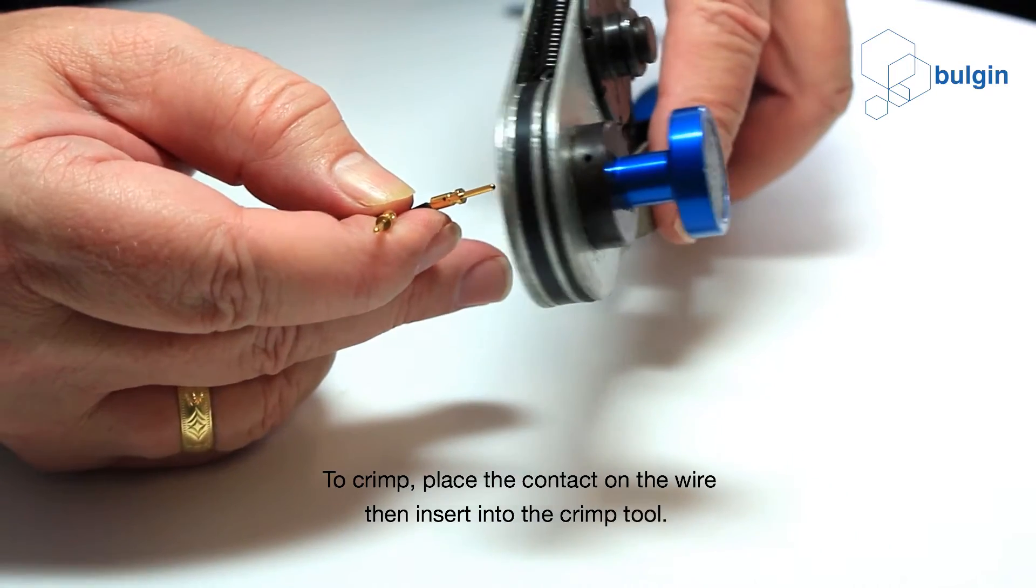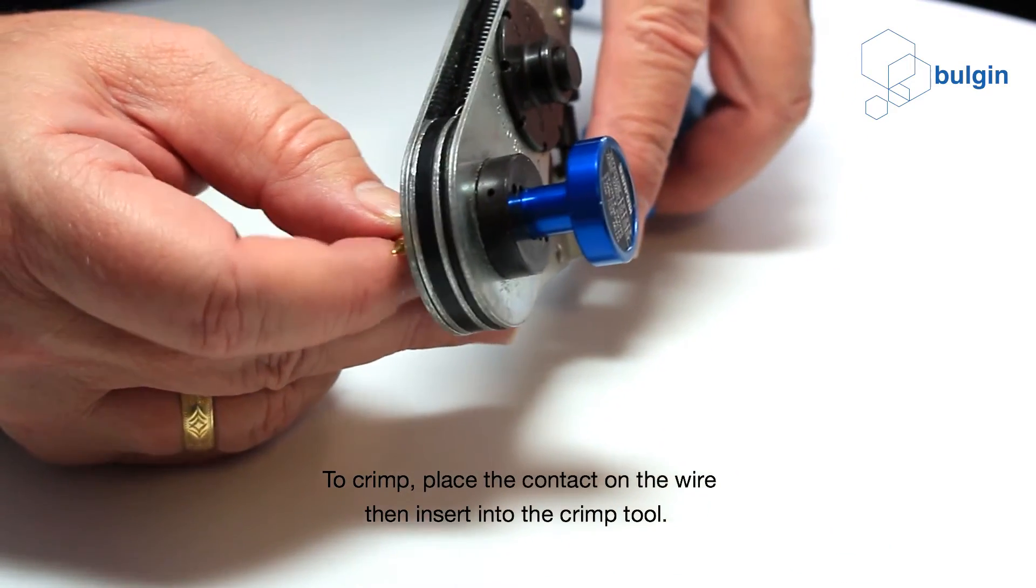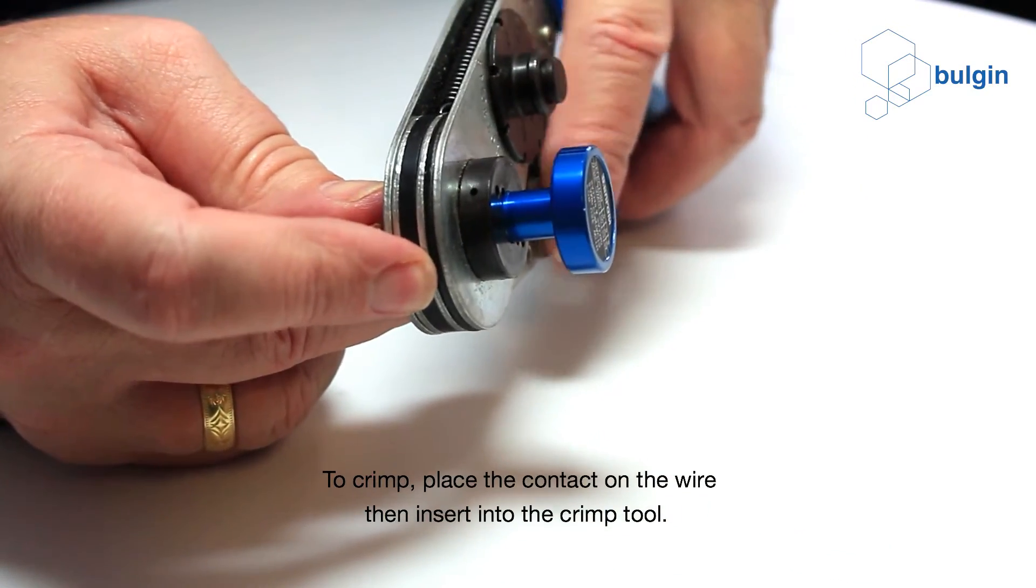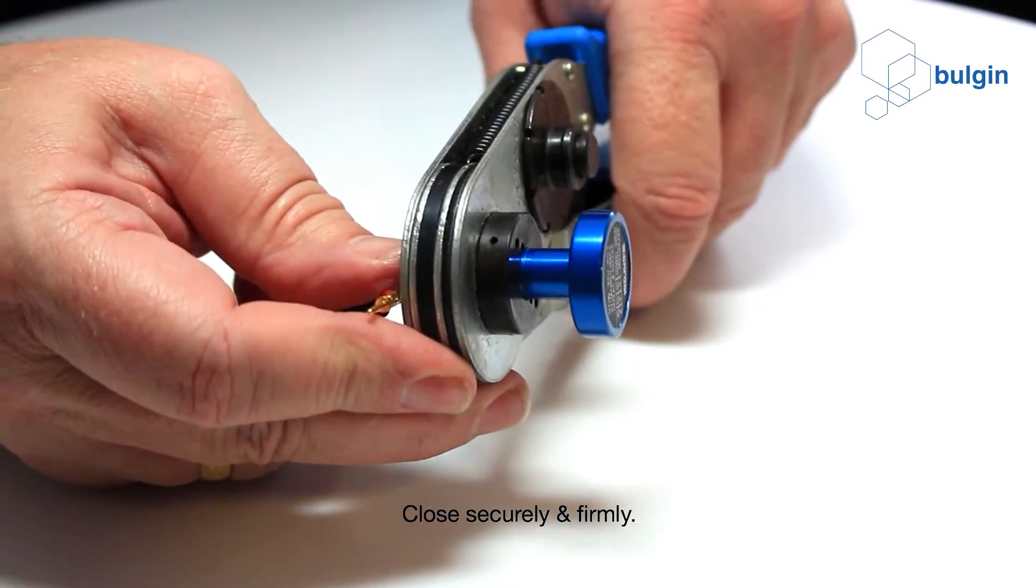To crimp, place the contact on the wire, then insert into the crimp tool. Close securely and firmly.